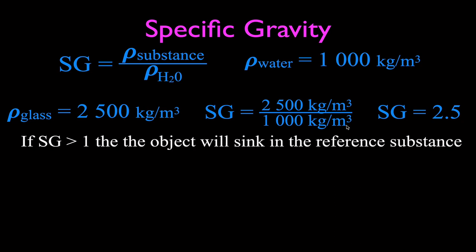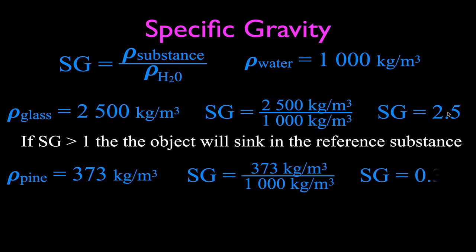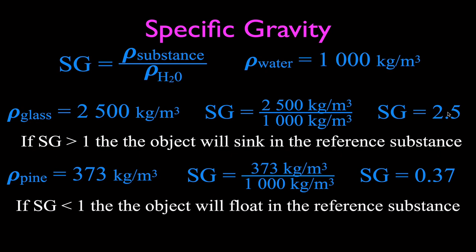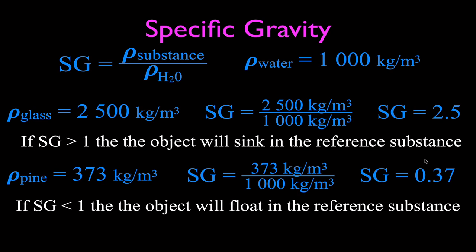If the specific gravity is more than 1, the object will sink in the reference substance — that's why glass sinks in water, since its specific gravity of 2.5 is greater than 1. Now looking at a different substance: pine wood has a density of 373 kilograms per meter cubed. Dividing by 1,000 gives a specific gravity of 0.37. If the specific gravity is less than 1, the object will float in the reference substance.